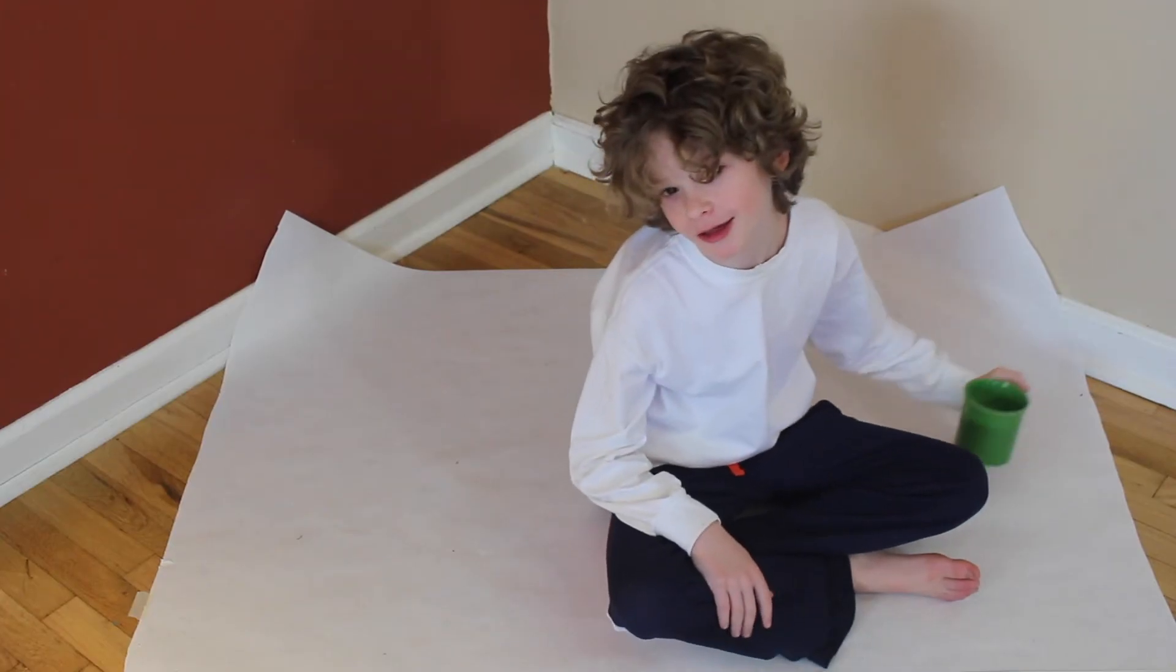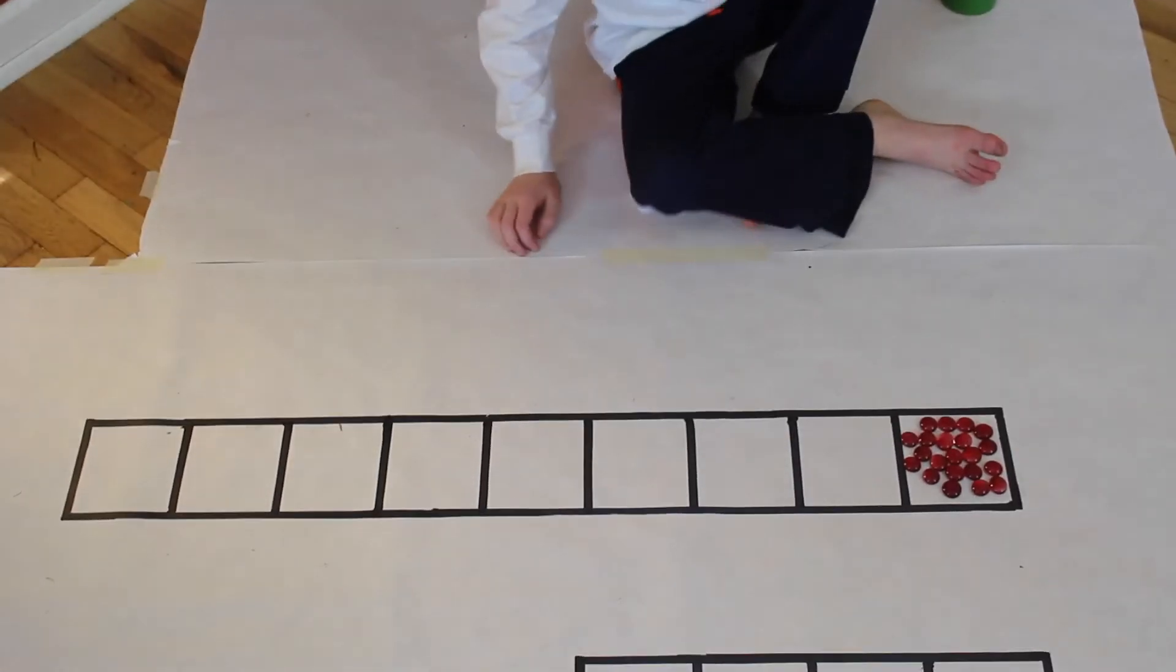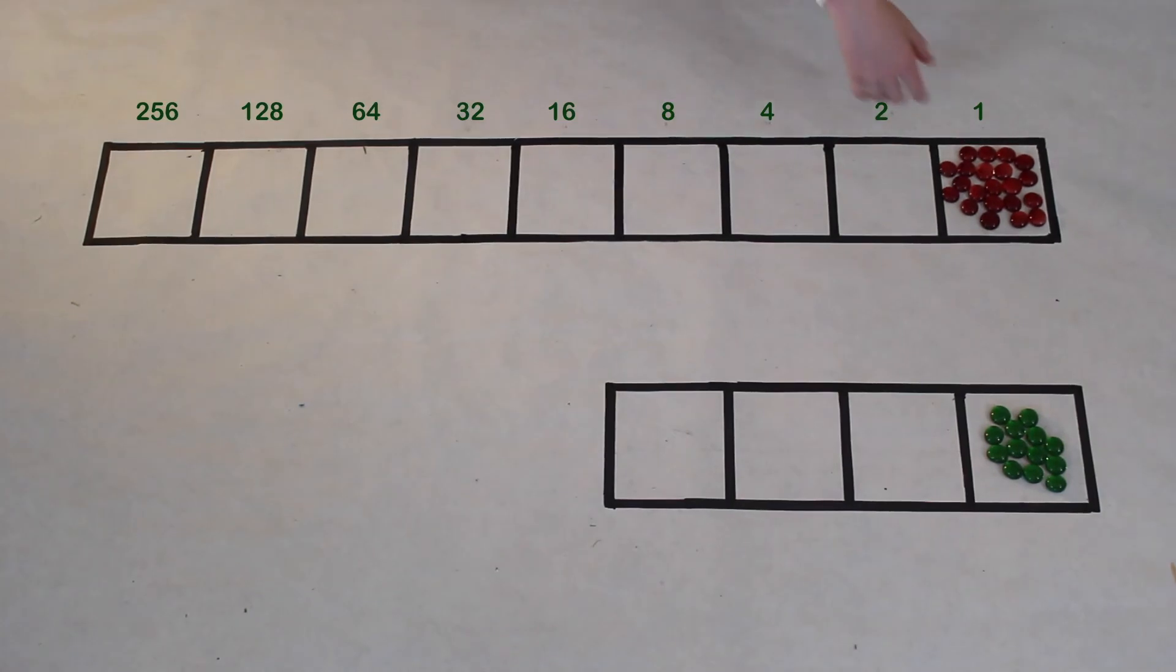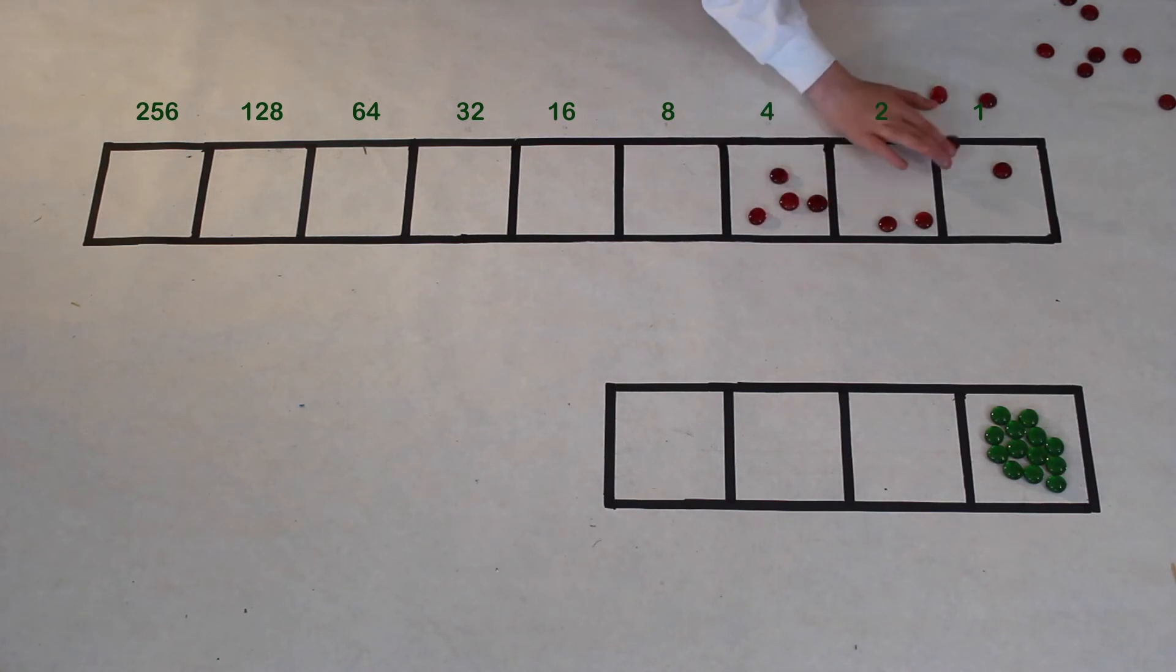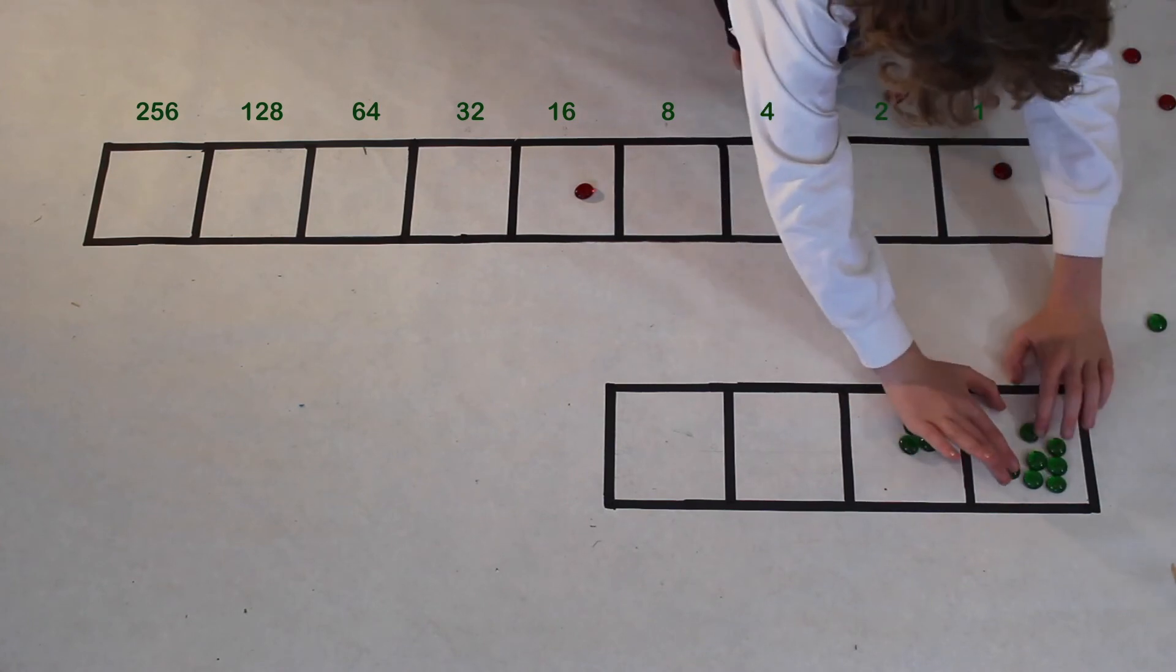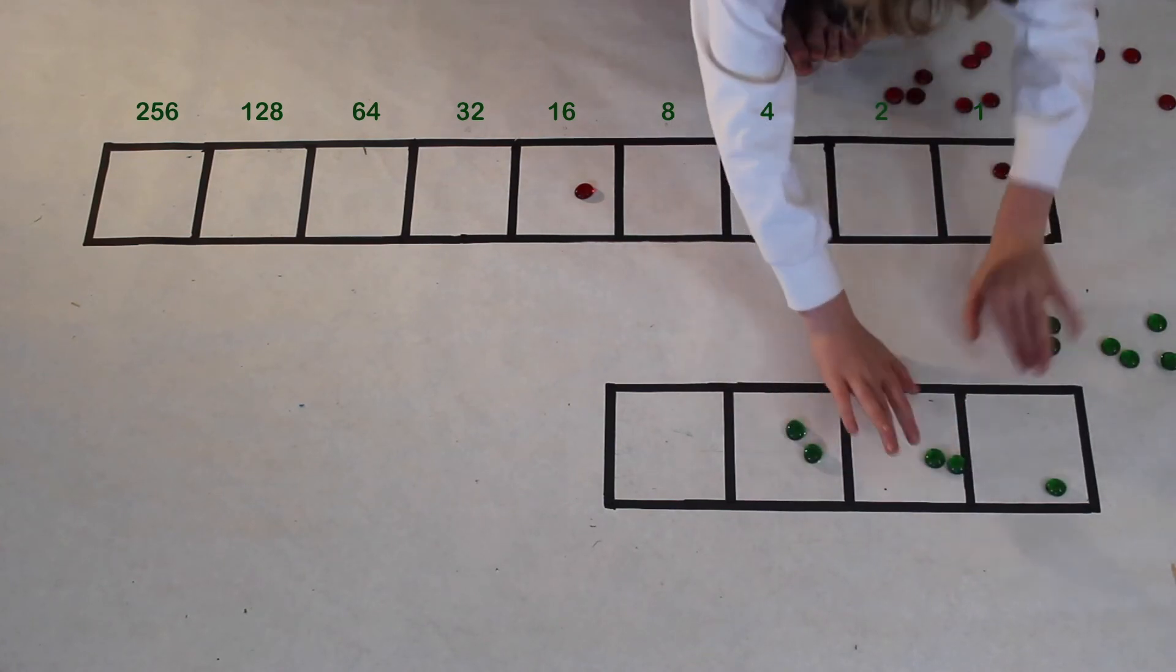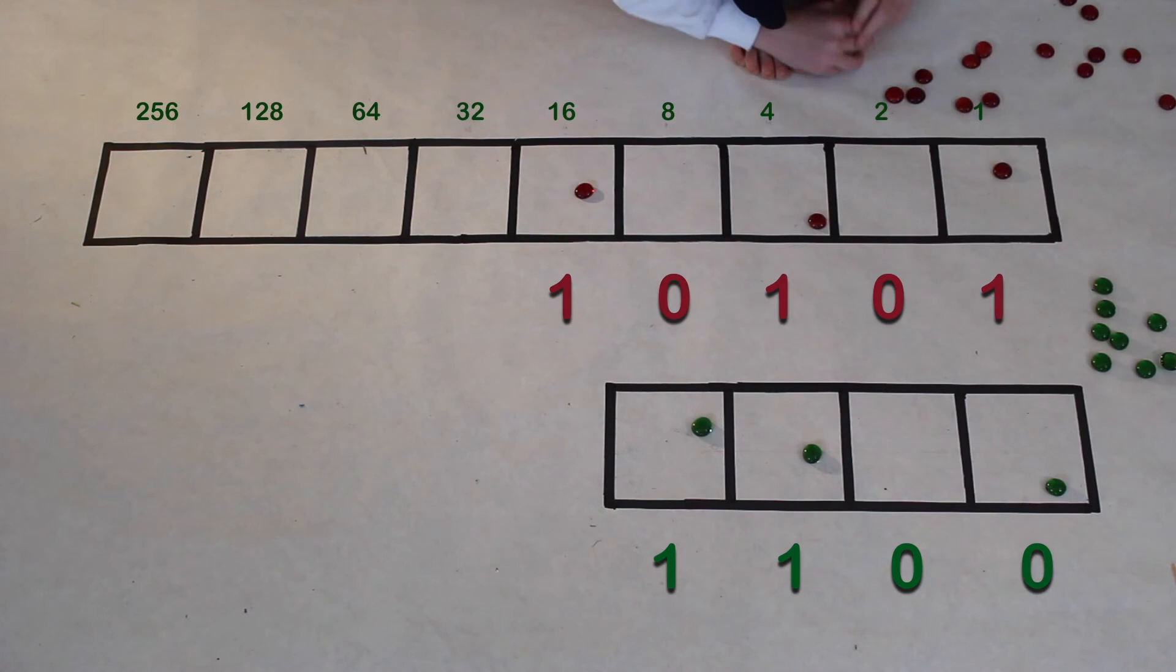Now we're going to be multiplying something big on this one. I think we can see we have 21 and 13 that we're going to be multiplying.